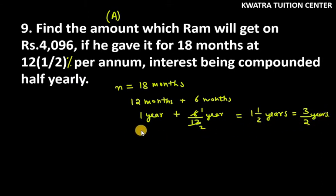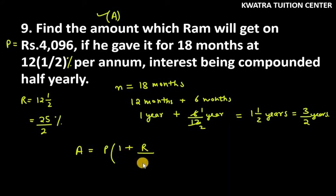So time is 3 over 2 years. Rate is 12 and 1/2, which you can simplify as 25 over 2 percentage. Principal has been given. This gives us amount. The amount formula is P times (1 plus R over 100) raised to n.